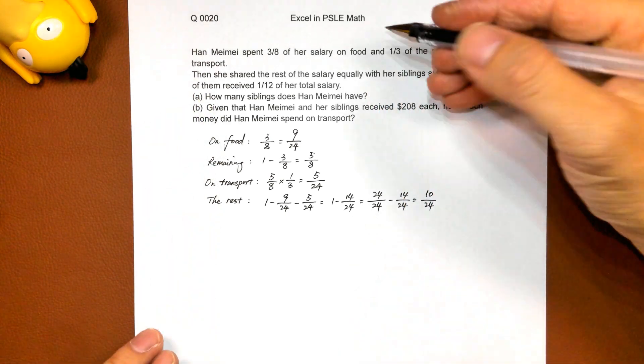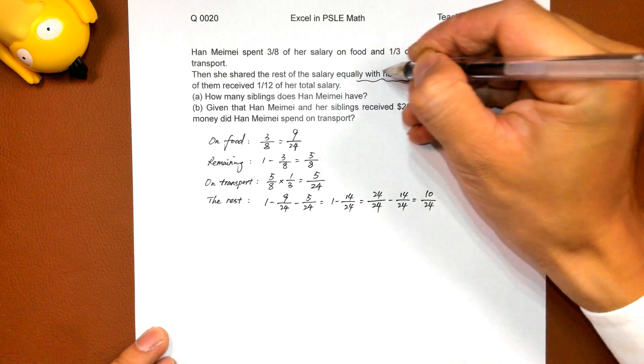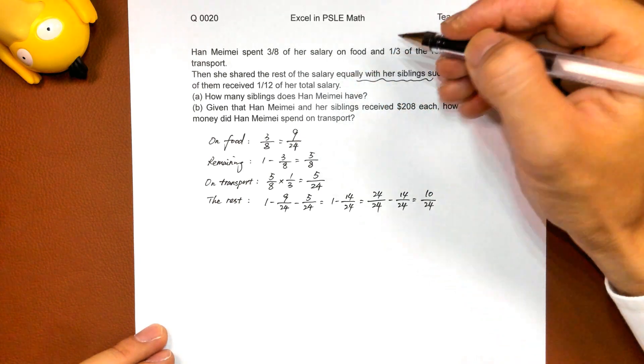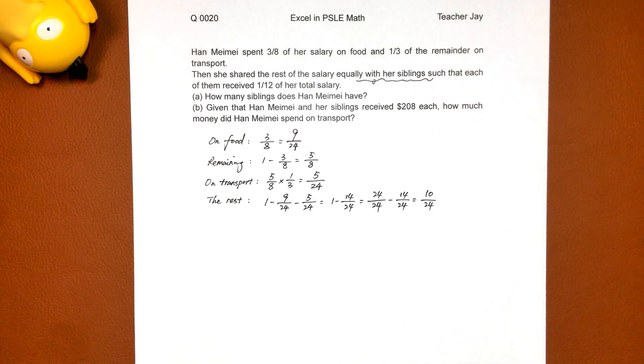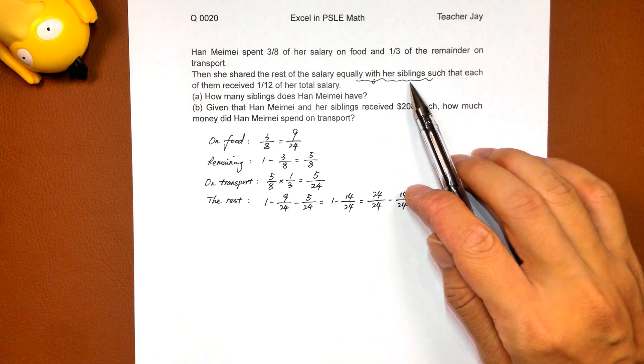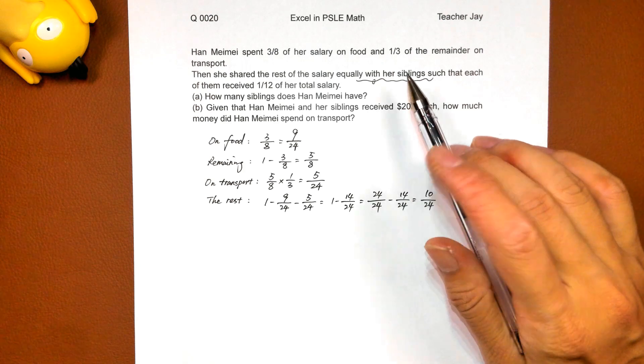Equally with her siblings. Share equally with... that means the number of siblings plus one is the total number of people share the remaining amount of salary. You must remember it's not just the number of her siblings, must plus her.